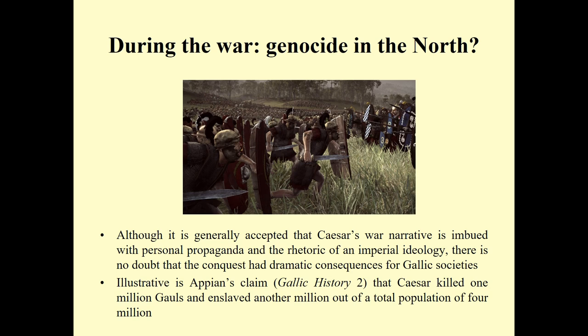Moving into the moment of actual military conquest in Northern Gaul, some colleagues — for example Nico Roymans — have claimed we can identify episodes of genocide in this area. Genocide is a strong word with many connotations and is debatable, but in any case what we do see are episodes of mass murder and enslavement. Caesar's narrative is obviously imbued by personal propaganda and imperial ideology, but there is no doubt that his conquest of Gaul had dramatic consequences. Appian claims that Caesar killed one million Gauls and enslaved another million out of a population of four million.